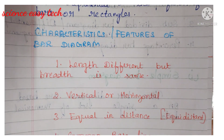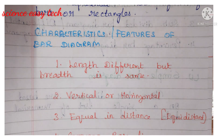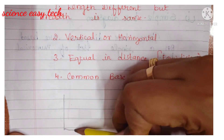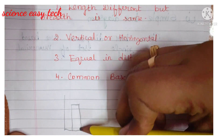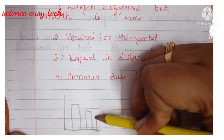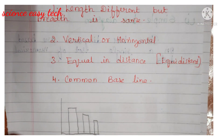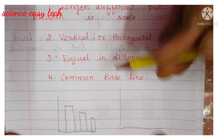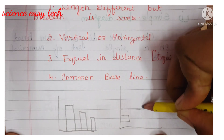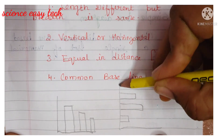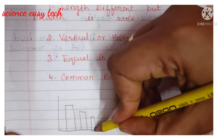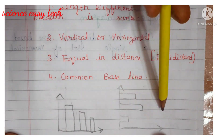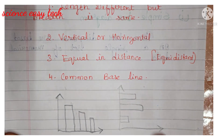The second feature: the bar diagram can be drawn either vertically or horizontally. In a vertical bar diagram, the bars are represented vertically, whereas in a horizontal bar diagram, the bars are represented horizontally. That is the difference between vertical and horizontal bar diagrams.